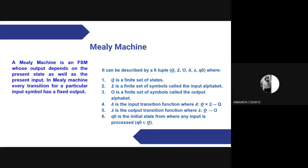In a Mealy machine, every transition for a particular input symbol has a fixed output. For a Mealy machine we have six tuples: Q, which is the finite set of states; epsilon, the finite set of input symbols called the input alphabet; O, the finite set of symbols called the output alphabet; delta, the input transition function where delta: Q × epsilon → Q; lambda, the output transition function where lambda: Q → O; and Q0, the initial state from where any input is processed, where Q0 belongs to Q.